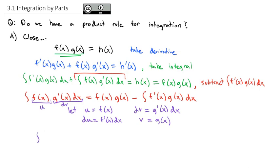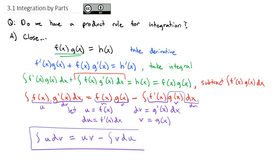So when we put this together, we now have the integral of u dv is equal to f of x — which is u — times g of x — which is v — so u times v, minus the integral. f prime dx is just du, and g of x is just v. So we have the integral of v du. And so this integral becomes our formula for integration by parts: the integral of u dv is equal to u times v minus the integral of v du.